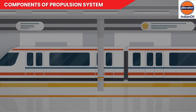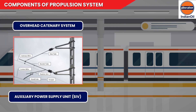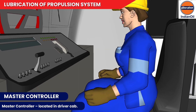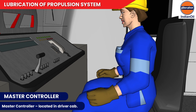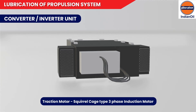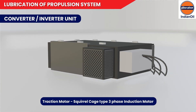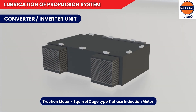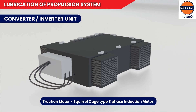Number three: propulsion system. Traction in general has two main parts — the first being the conductor that supplies electric power, and the other being the pantograph or similar structure for retrieving electric power from the conductors. The propulsion system consists of a master controller located in the driver's cab. A converter or inverter unit converts DC power to three-phase AC supply and feeds it to the traction motors for the desired motoring and braking demands generated by the train operator.